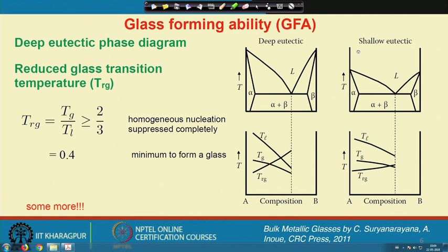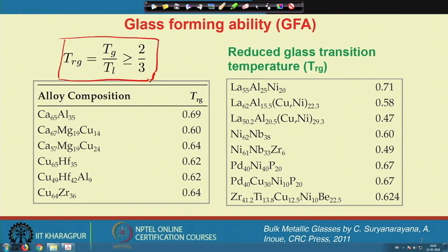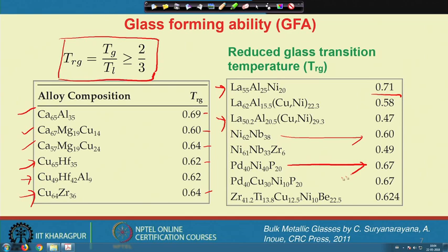Let us look at different glass-forming ability values and reduced glass transition temperatures reported so far. Calcium and copper-based glasses have values of 0.69, 0.60, 0.64, 0.6264, and so on. Some lanthanum-based alloys show slightly higher values. Some compositions are much poorer. Nickel-niobium is a little bit better, and palladium — which is a very good glass former — has a value greater than 0.67. Out of the whole list, we can easily say that palladium-based compositions are better glass formers, which aligns with the earlier observation that we can make much bigger samples.